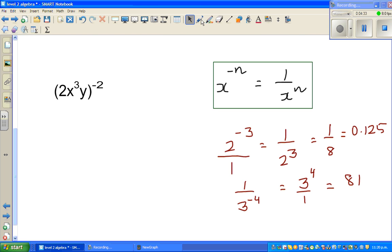So here this is sitting in the numerator. So this negative power, if it has to become positive the whole thing has to go down. So this will become 1 over 2x cube y to the power 2. So this is nothing but 1 over 2x or let me use a rule here.